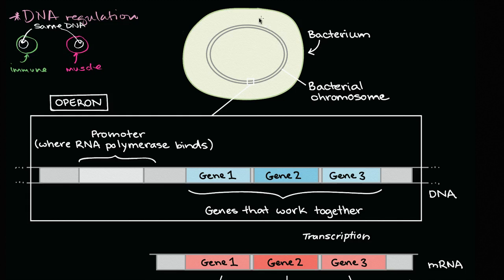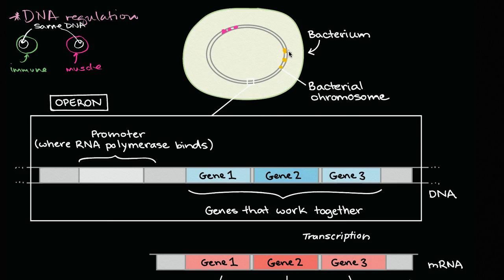Even if you think about a unicellular organism - here we have a bacterium, just one cell - even it will not want to transcribe and translate all of its genes at the same time. For example, this might be a gene involved in the digestion of a certain type of food if that food is present. Maybe you have some genes related to a stress mechanism - if it needs to go into hibernation. If it's not under stress, it doesn't need to express those genes, but if it is under stress, it does.